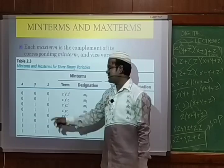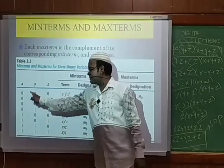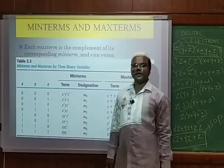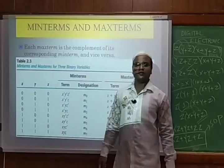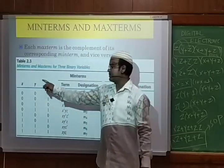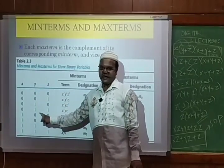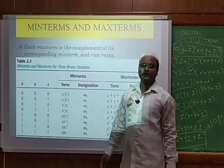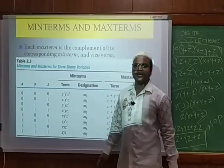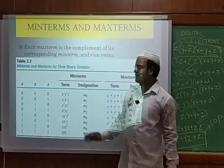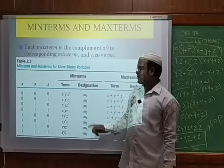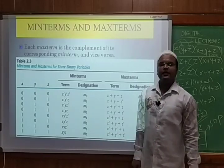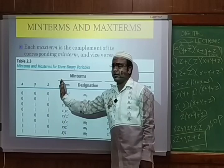For 000: x̄ȳz̄. For 001: x̄ȳz. For 010: x̄yz̄. For 011: x̄yz. Continuing this pattern, for 111 we write xyz without any complement. This notation is called the minterm. The minterms are labeled m0, m1, m2, m3, m4, m5, m6, and m7 corresponding to the decimal values.